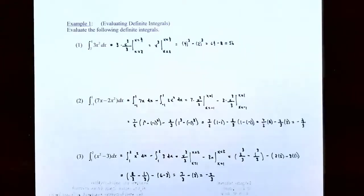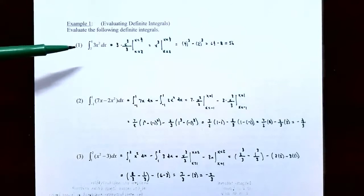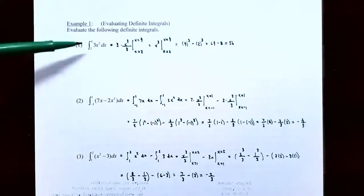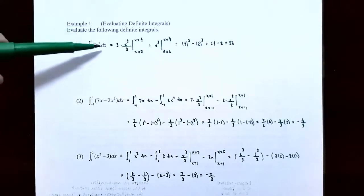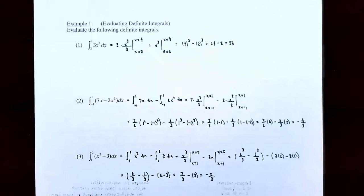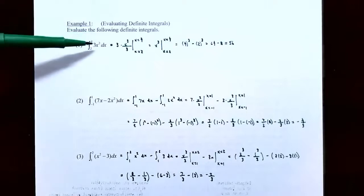Example one: evaluating definite integrals. Number one, find the value of the definite integral from x equals two to x equals four of 3x squared dx. We need to find an antiderivative, using c equals zero. The antiderivative of 3x squared: three is a coefficient we keep, and x squared is a power function, so we use the power rule for antiderivatives — add one to the exponent to get x cubed, then divide by the new exponent three. So the antiderivative is 3 times x cubed divided by 3.